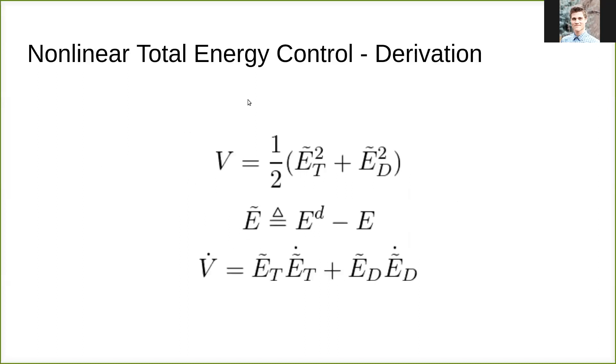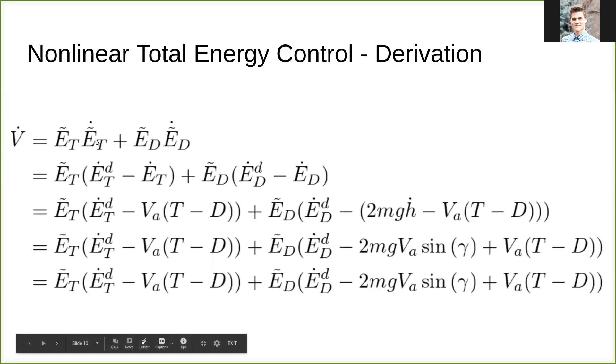Now, in order to define the control that will stabilize our system, we'll look at the Lyapunov function, which we define to be one half of E tilde total squared plus E tilde difference squared, where E tilde is just defined as the energy desired minus our current energy state. We'll describe what energy desired is once we get to our guidance model later. V dot can then be taken to be as follows, very straightforward.